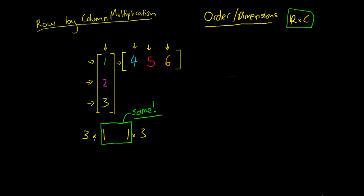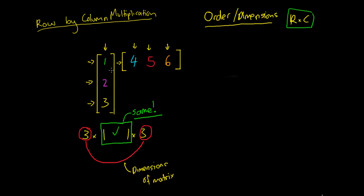If they can be multiplied and these two inner numbers are the same, then the two outside numbers will tell you the order of your resulting matrix. So if we have a one and a one in the middle that match, we can multiply our two matrices together, and the resulting matrix is going to be a three row by three column matrix. We can draw up a three by three matrix that we'll be filling in.